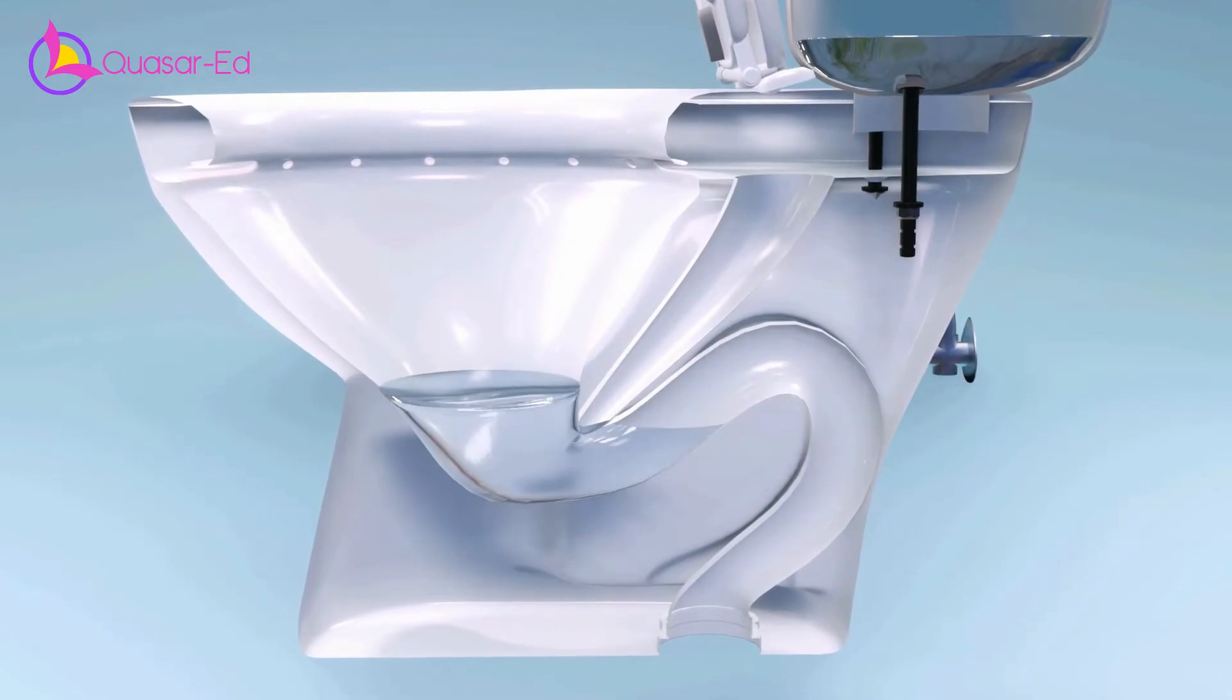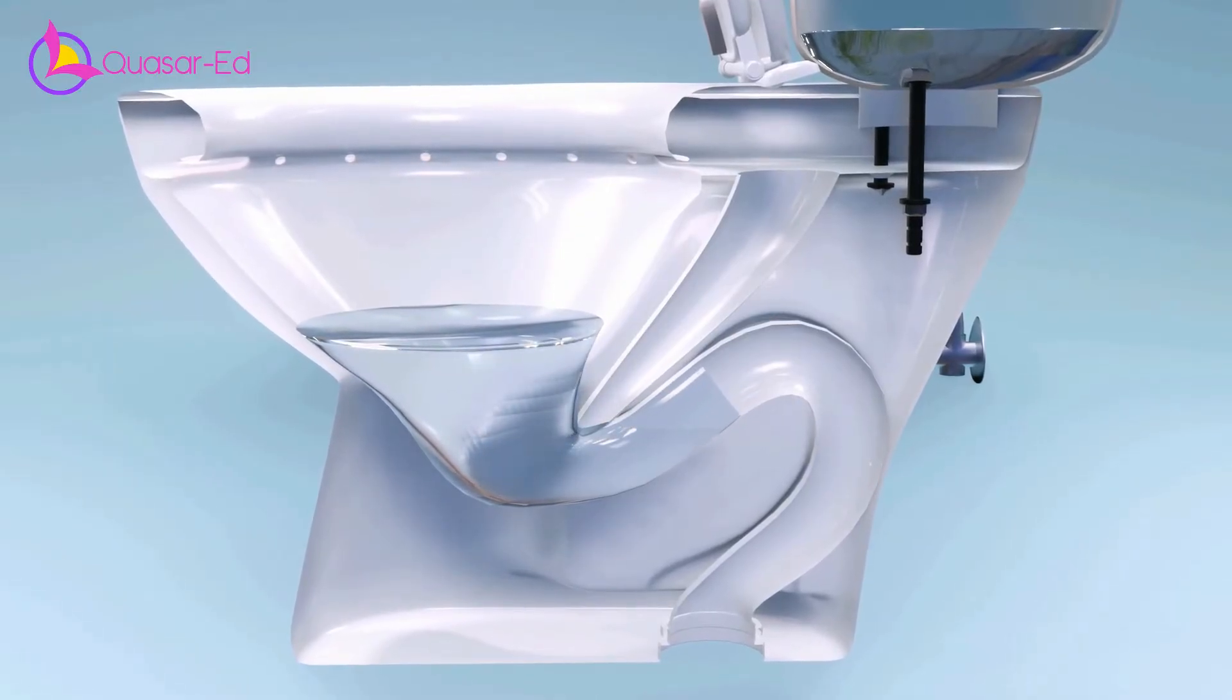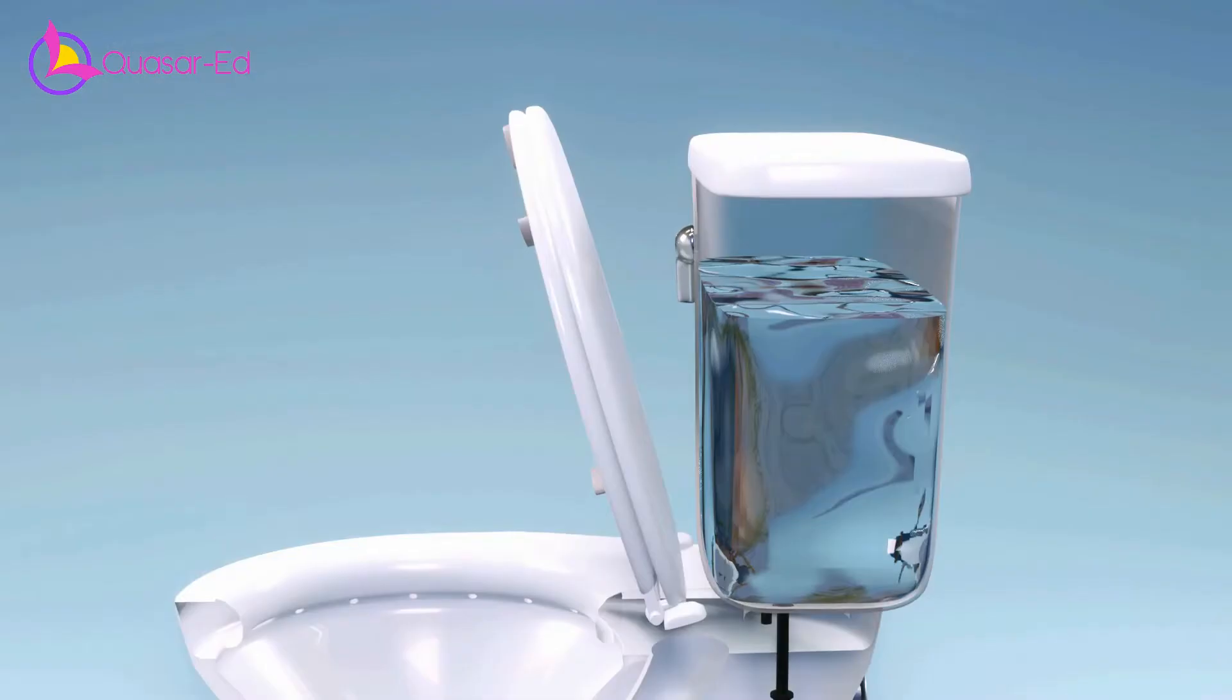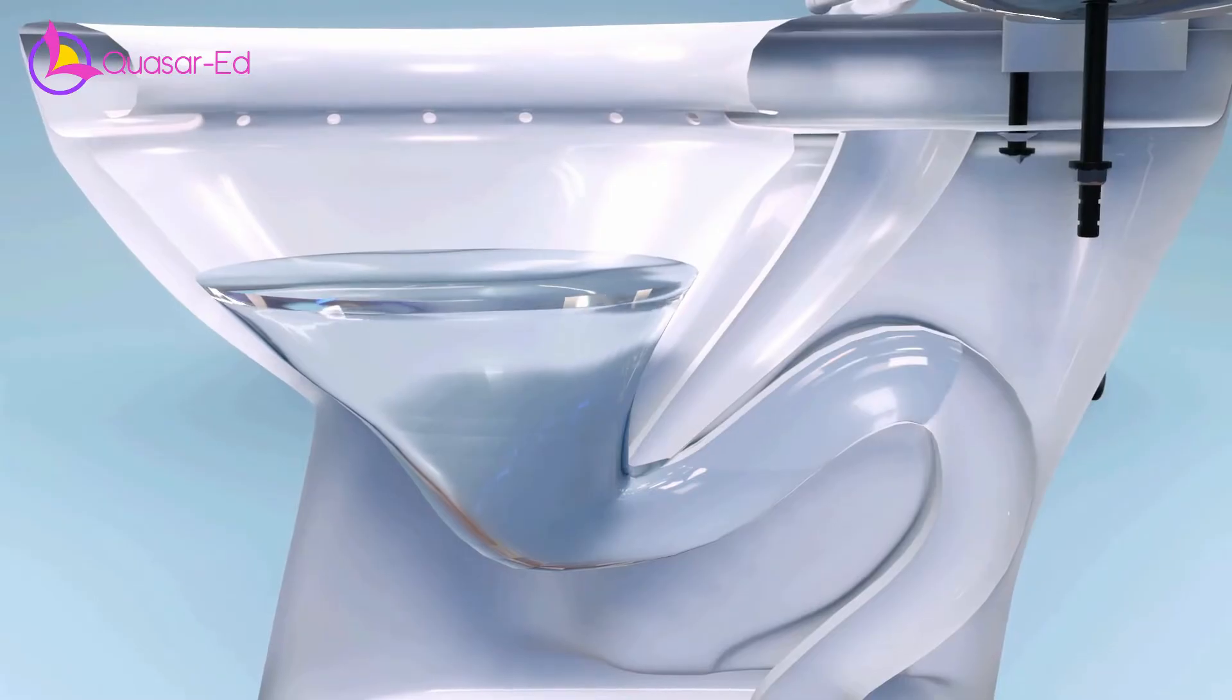When you pour the water inside the bowl, the excess water will just overflow, leaving the U-shape filled as it was before. But if you pour enough water to fill up the entire S-shape tube, the siphon process will start.